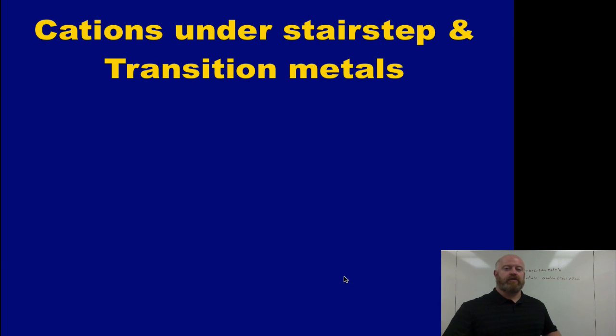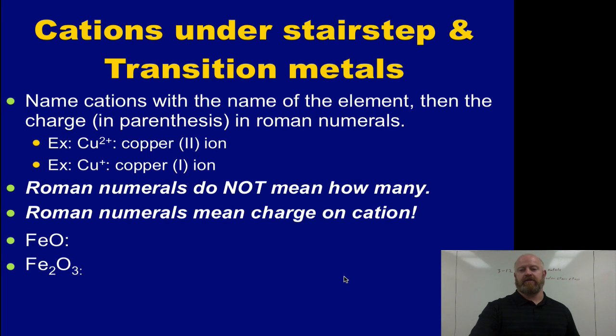Let's go on to how do we actually go through this process of naming these. We're going to focus on the cations under the stair-step and those other transition metals. When we're working with these, first thing we need to realize is that when we have things like copper, copper can form more than one charge. It can form a 2-plus charge or a 1-plus charge. Because it has more than one possibility, somehow we have to tell the world what copper we're talking about.